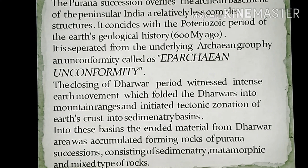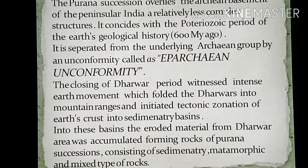The closing of the Dharawar period witnessed intense earth movements which folded the Dharawars into mountain ranges and initiated tectonic zonation of the earth's crust into sedimentary basins. The rock fragments, particles, and sediments from the Dharawars and Archeans were accumulated in these sedimentary basins. The eroded material from the Dharawar was accumulated in these basins, forming rocks of Purana successions consisting of sedimentary, metamorphic, and mixed types of rocks.